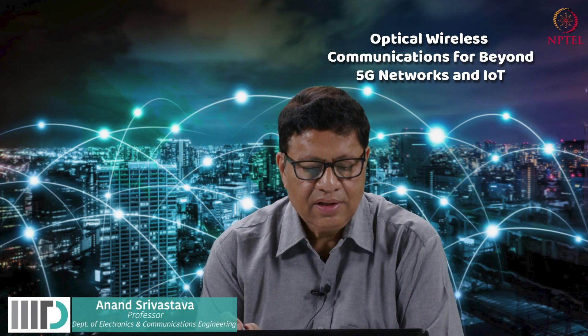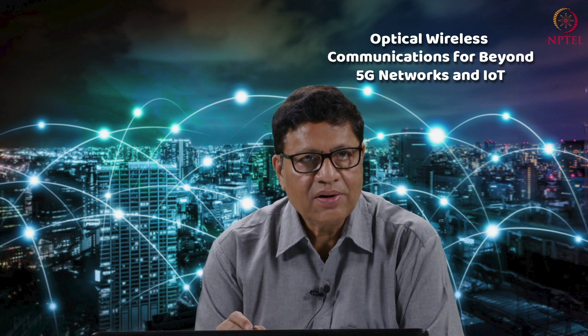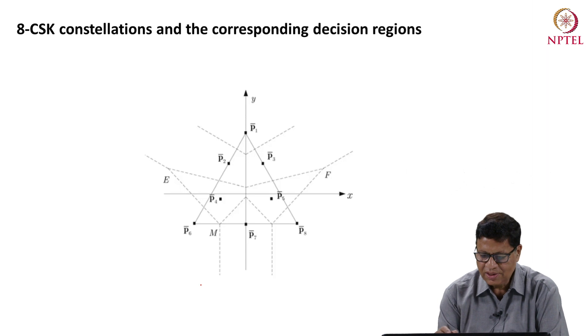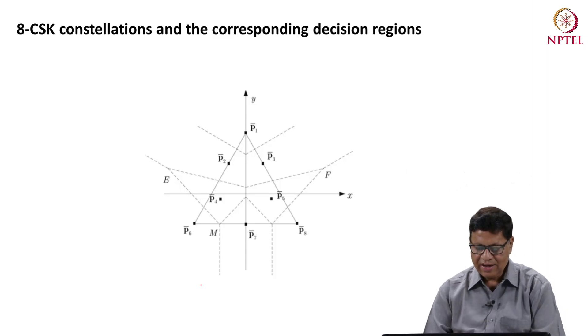Just now we have seen the probability of error or SER symbol error rate for 4 CSK constellation. Now, this is for the 8 CSK constellation and here in this diagram we have shown the decision regions.